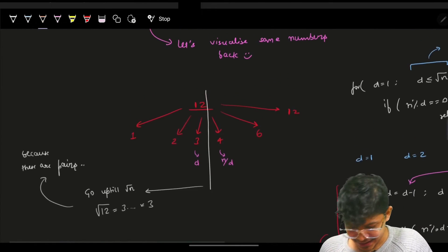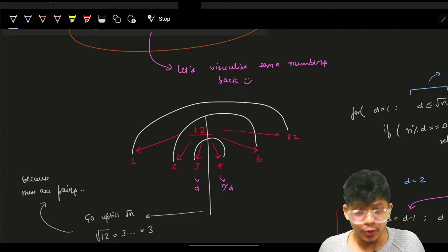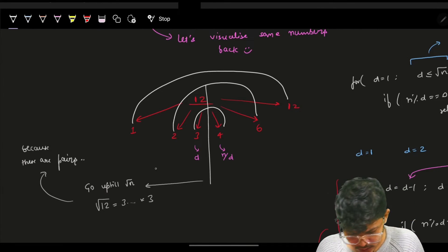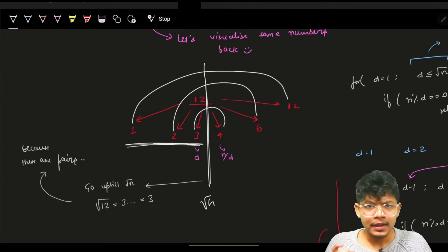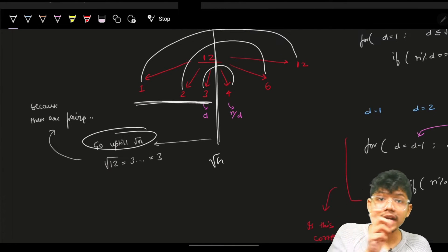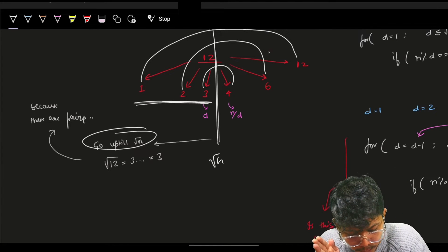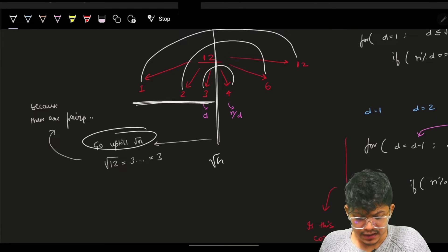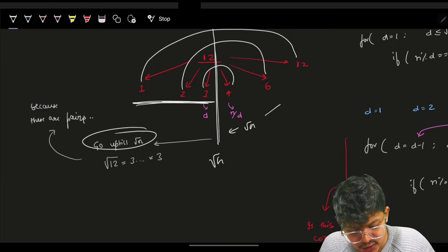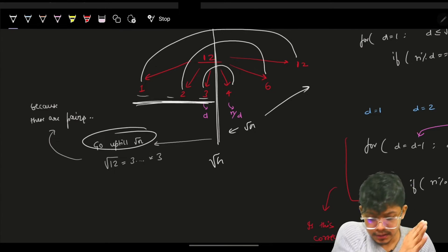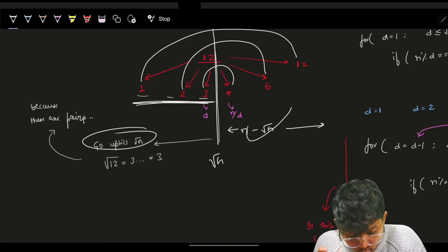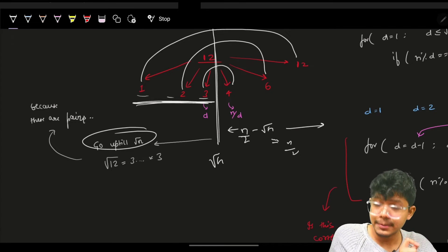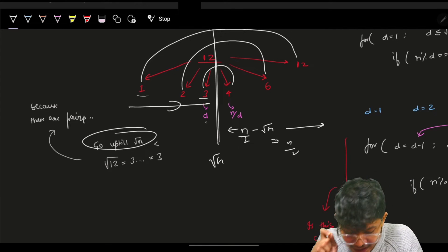For a sub-O(n) approach, we revisit the pairing pattern: 1 pairs with 12, 2 pairs with 6, 3 pairs with 4. Instead of going to n/2, we only need to go up to √n — which is the left half of the pairs. The right half (n/2 minus √n range) can be derived from the left half by computing n/d.